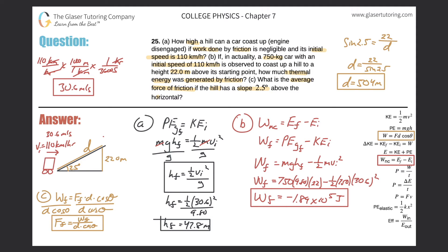Now we need the angle between the friction force vector and the displacement vector. The displacement is directed up the slope. Friction always opposes motion, so friction points down the slope — exactly opposite to displacement. Lining them up tail to tail, the angle between them is 180 degrees. That is the theta we use in the formula, not the slope angle.